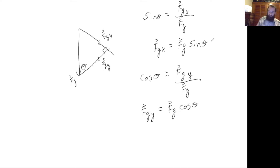And then if we replace the force of gravity with m times g, we get that the x and y components are mg sine theta and mg cosine theta respectively.